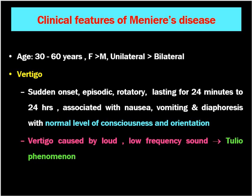Regarding clinical features of Meniere's disease: it is common in the age group of 30 to 60 years. Females are more affected than males. Unilateral involvement is more common than bilateral. The first symptom is vertigo — sudden onset, episodic, rotatory, lasting 20 minutes to 24 hours, associated with nausea, vomiting, and diaphoresis.